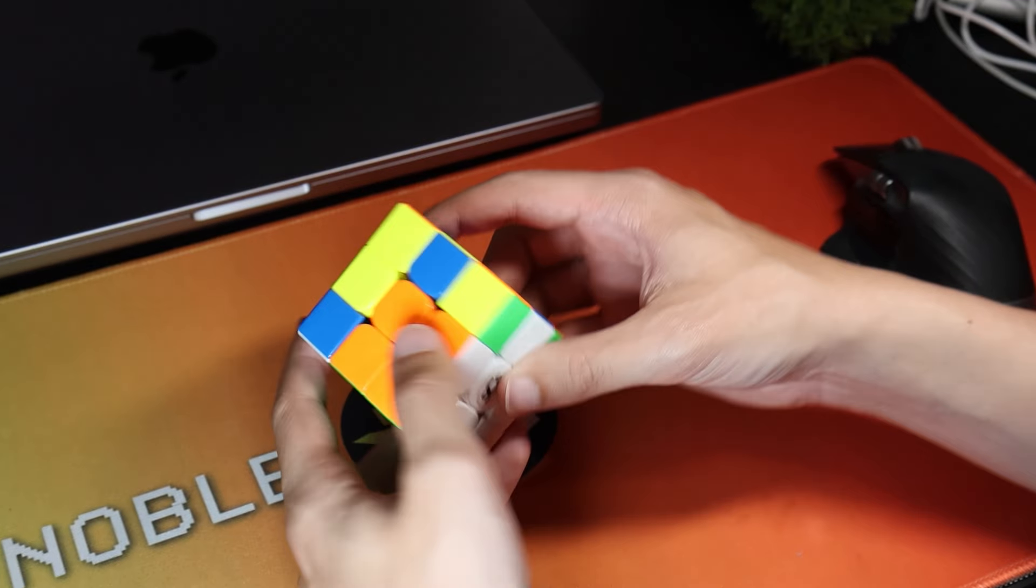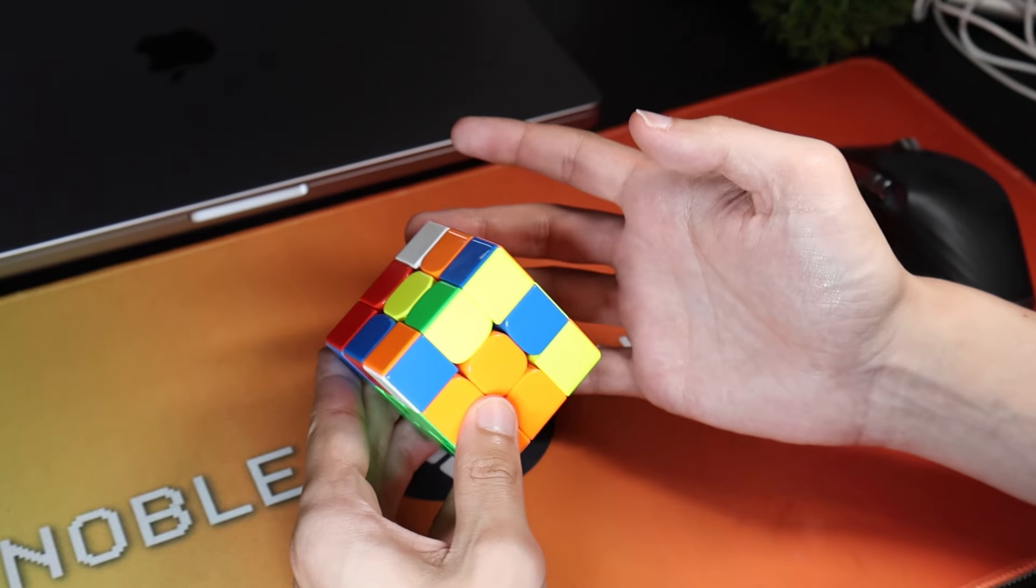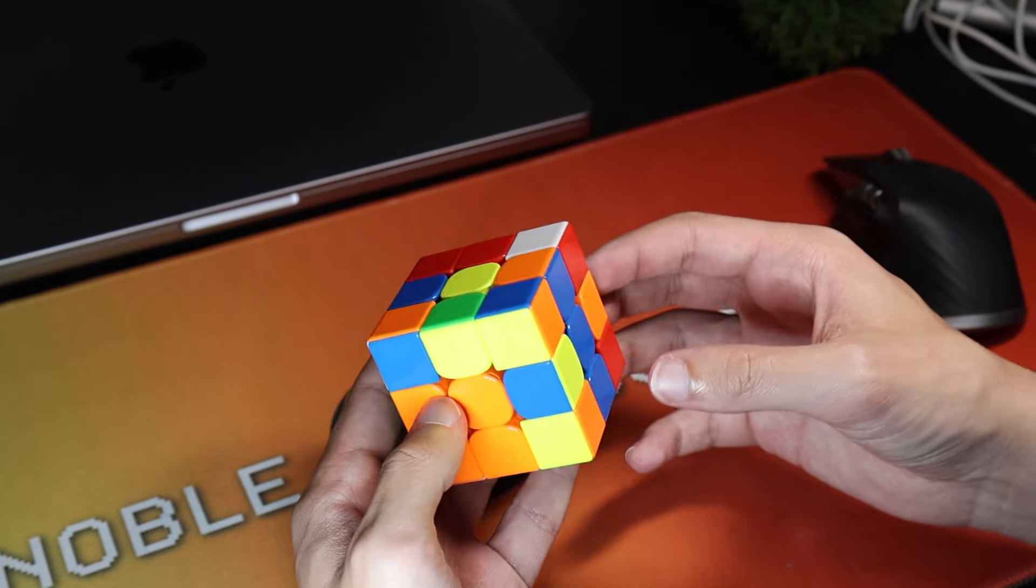That means that we've got this whole block here, this cross piece, and then we've just got the orange and blue and the red and blue. That means we've just got the orange, blue and red, blue pieces left.